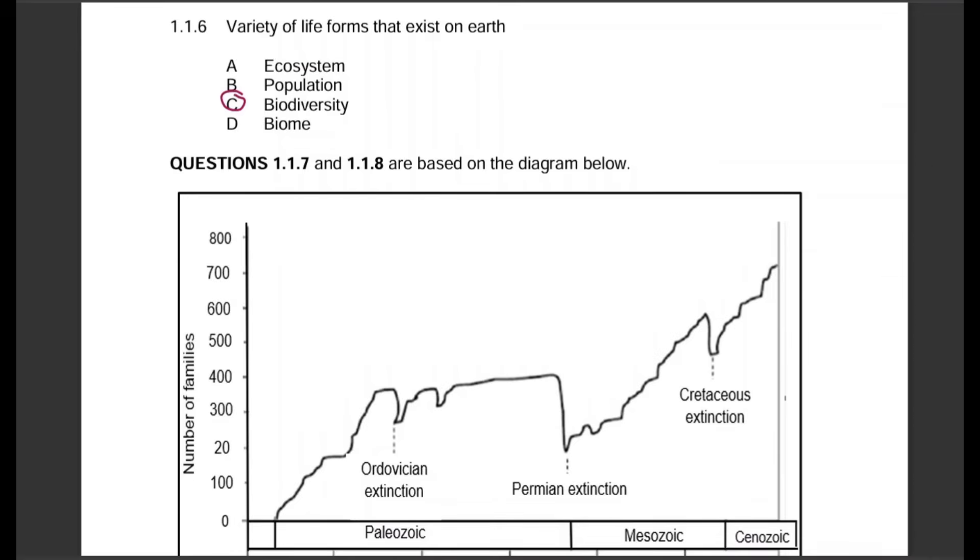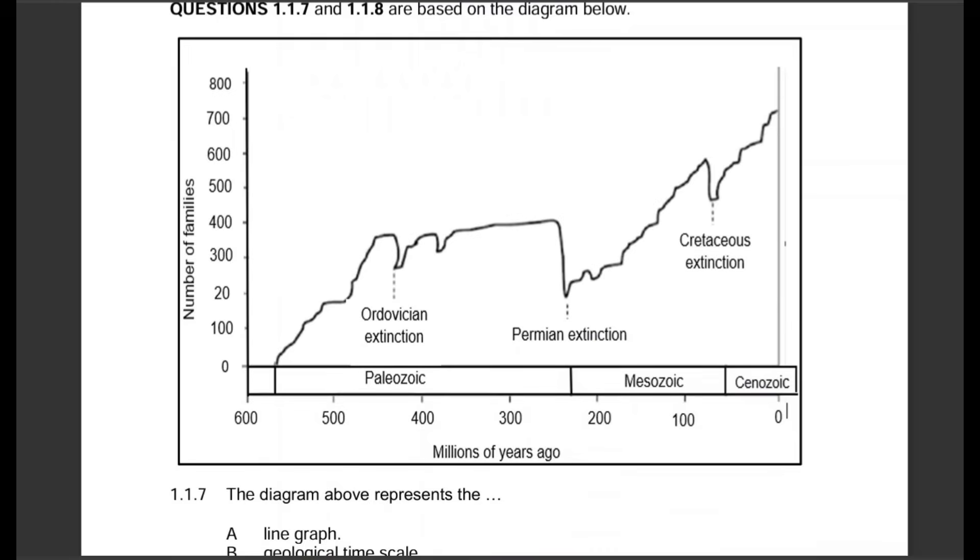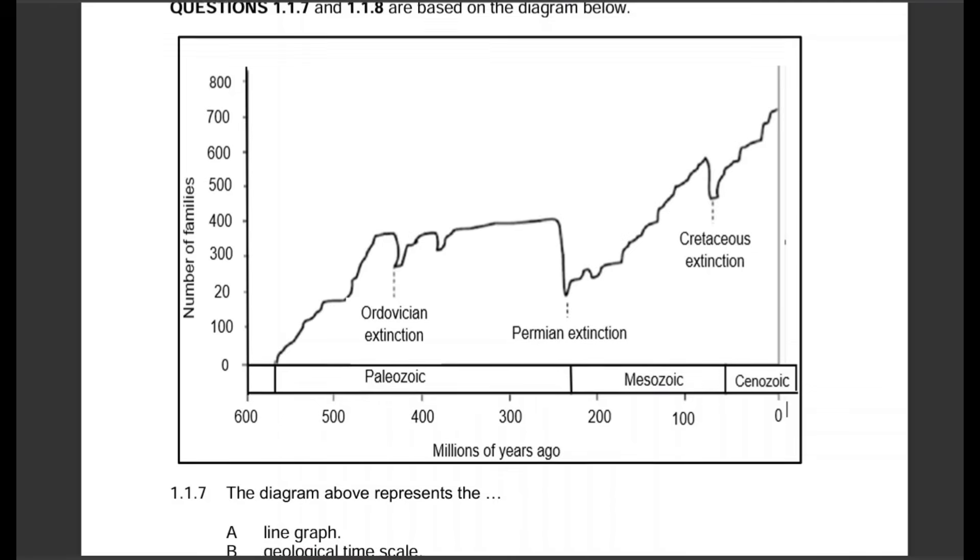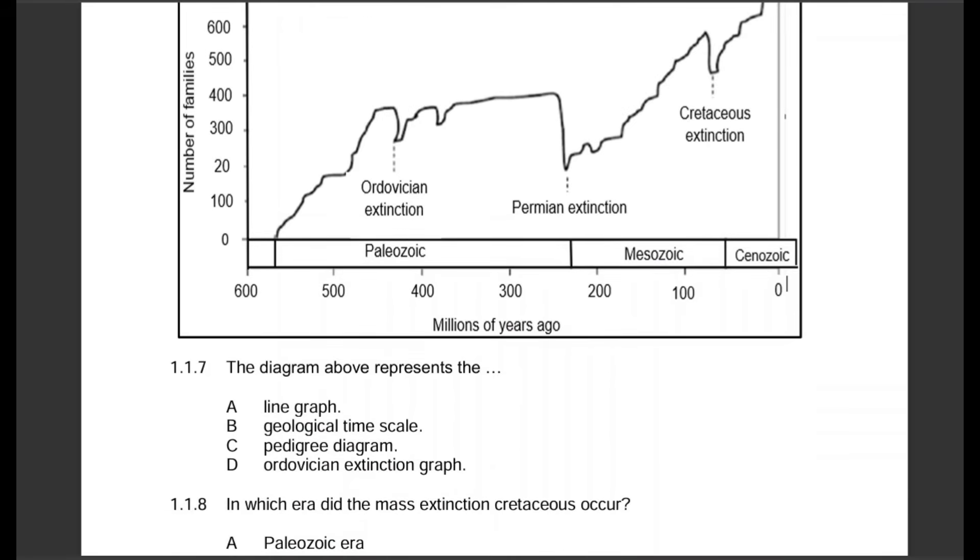Questions 1.1.7 and 1.1.8 are based on the diagram below. This diagram shows millions of years ago and the eras on the x-axis, and number of families on the y-axis. Question 1.1.7: The diagram above represents what? Is it a line graph, geological time scale, pedigree diagram, or extinction graph? This is obviously geological time scale, so that is B.